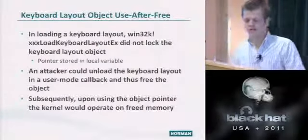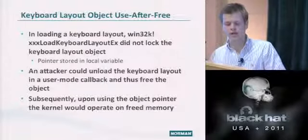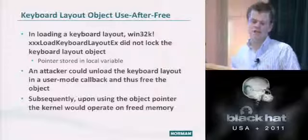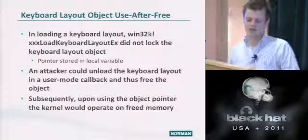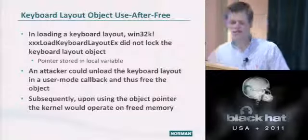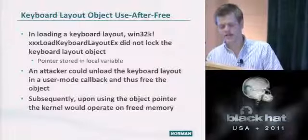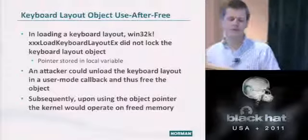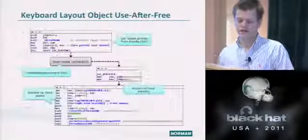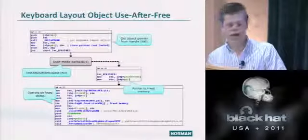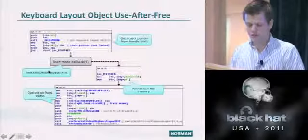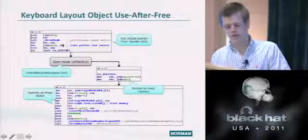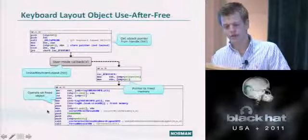Another example is in keyboard layout objects. When loading a keyboard layout object, you can optionally call an unload function on a handle you first provide. Win32K did not lock this handle — it simply got the pointer to the object. You could unload that handle in a user mode callback, and then the remaining code would operate on freed memory. You could call UnloadKeyboardLayout on the handle provided, causing the subsequent code to operate on freed memory.